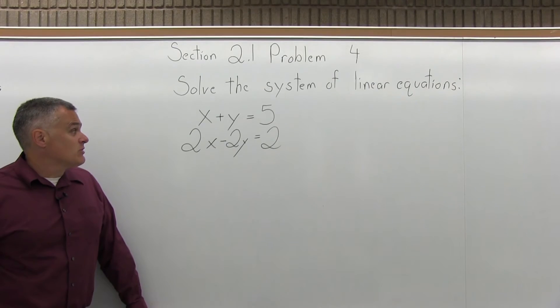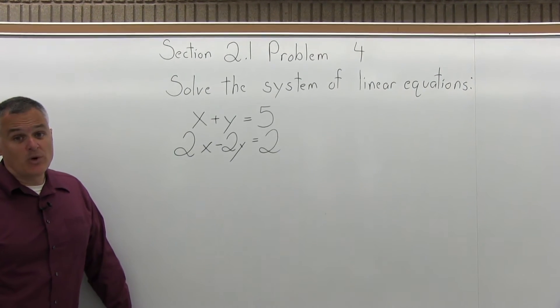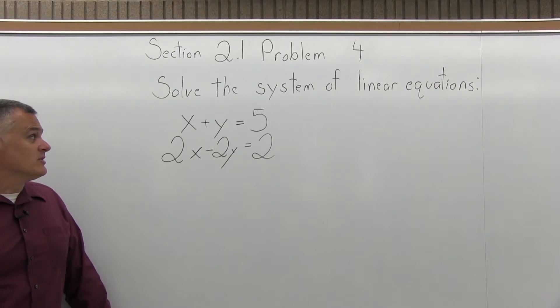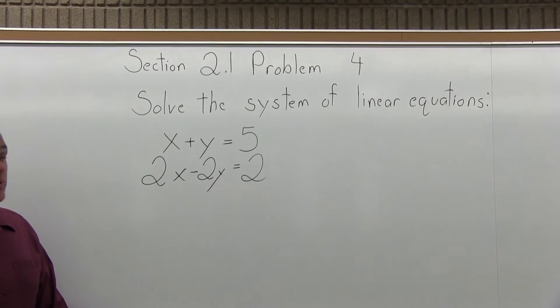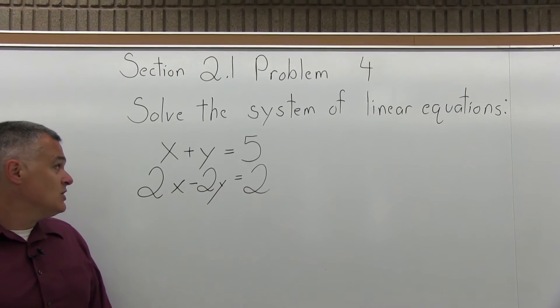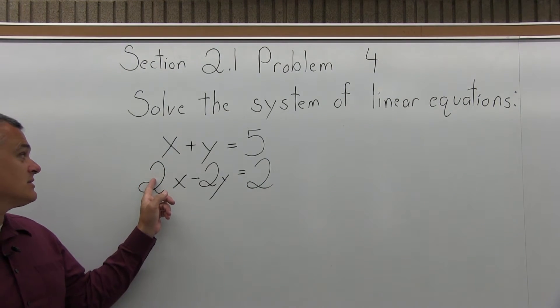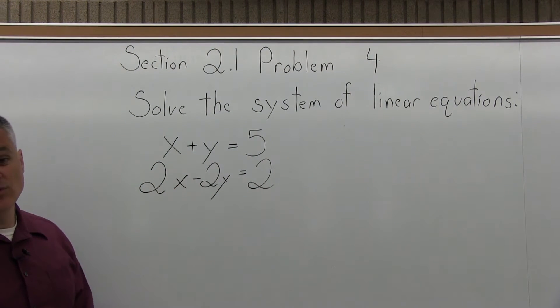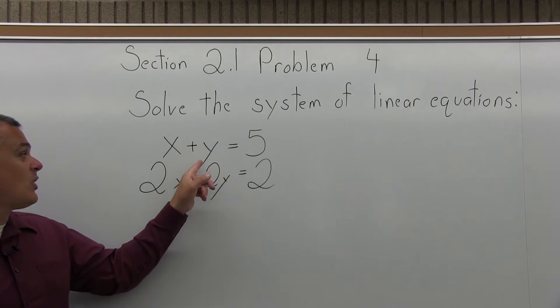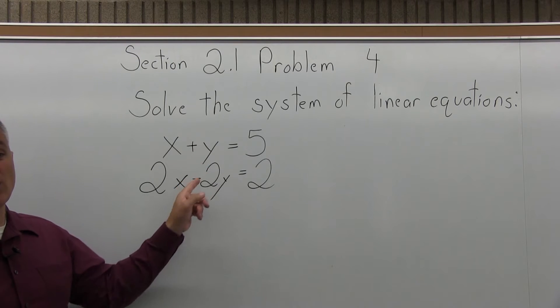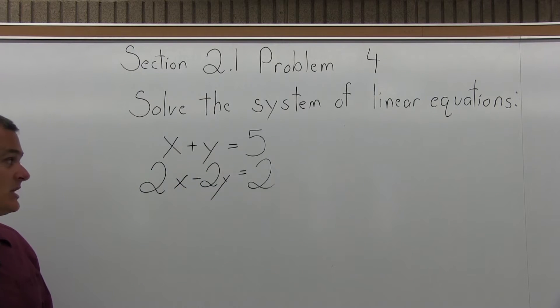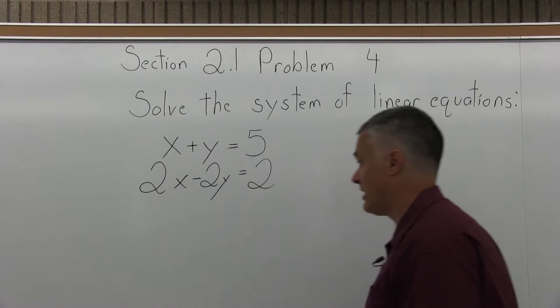So to solve this, what we have to do is multiply one or both equations times some values so that one of the variables has the same number in front, but with opposite signs. So we could go for 2x and negative 2x, or 2y and negative 2y, pretty similar, you should get the same answer either way. I'm going to choose to cancel the y's because they already have opposite signs, that'll make it a little bit easier, but you should be able to cancel the x or the y.